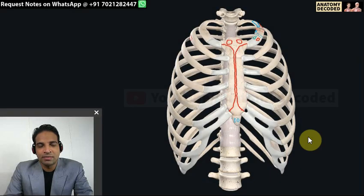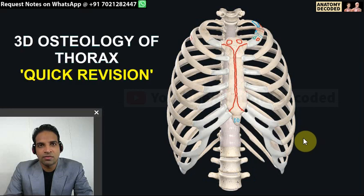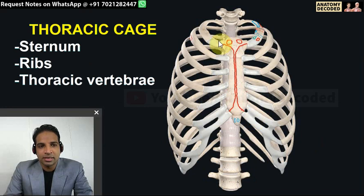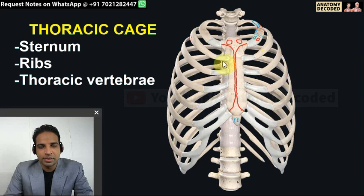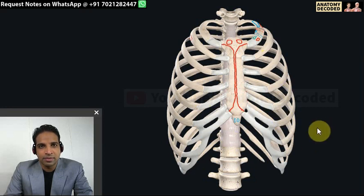Hello everyone, welcome to the session on osteology of thorax. In this session we'll be quickly revising the thoracic cage, the various joints in the thoracic cage, and individual bones - also covering the sternum, ribs, as well as the thoracic vertebrae. So let's begin with the thoracic cage first.